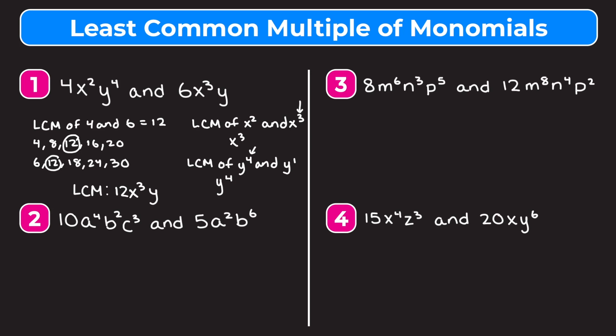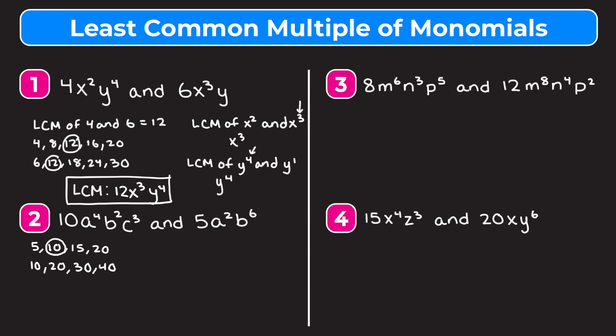Moving on to example 2, we have 10a to the fourth b squared c cubed and 5a squared b to the sixth. I'll write out some multiples of 5 and 10: multiples of 5 are 5, 10, 15, 20, and multiples of 10 are 10, 20, 30, 40. The least common multiple of 5 and 10 is just 10.